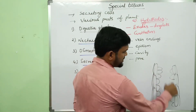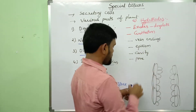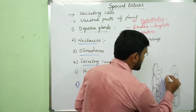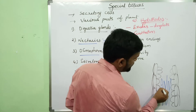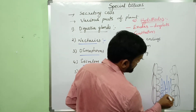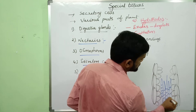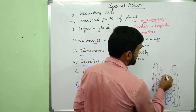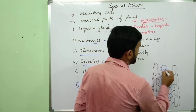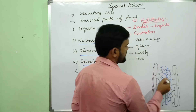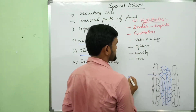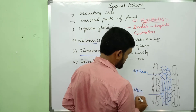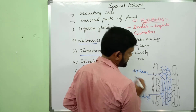In the center of the leaf, vein endings are present. Tracheids are present in the vein endings. These vein endings are associated with loosely arranged parenchyma cells. This loosely arranged parenchyma is called epithem.